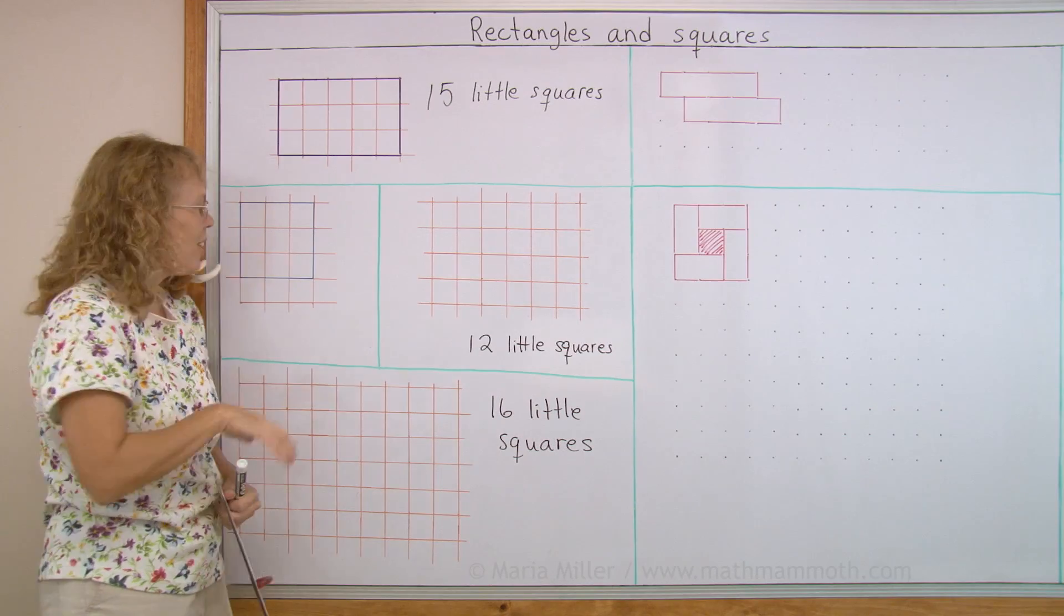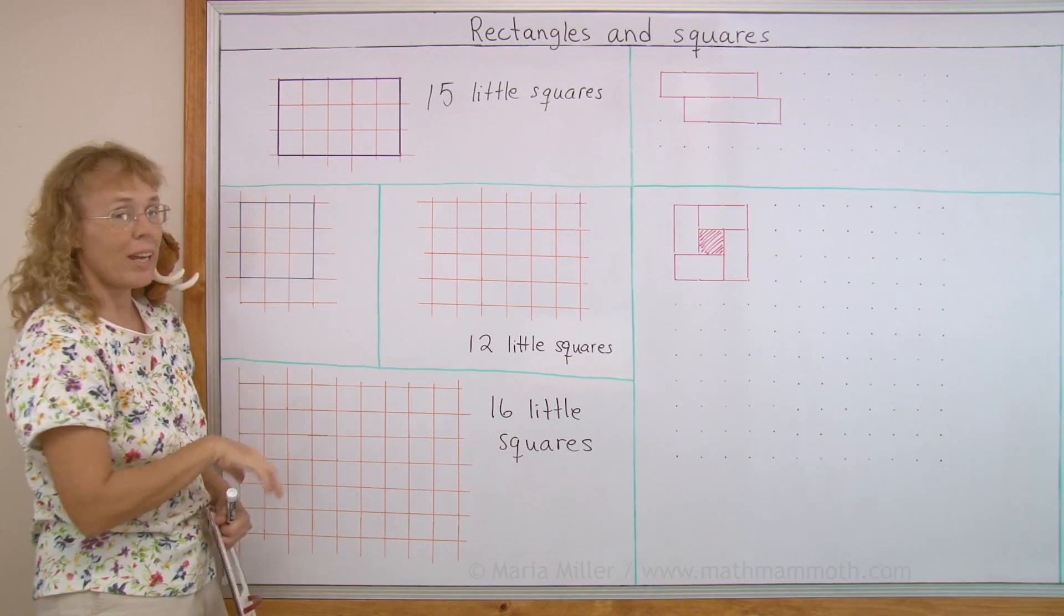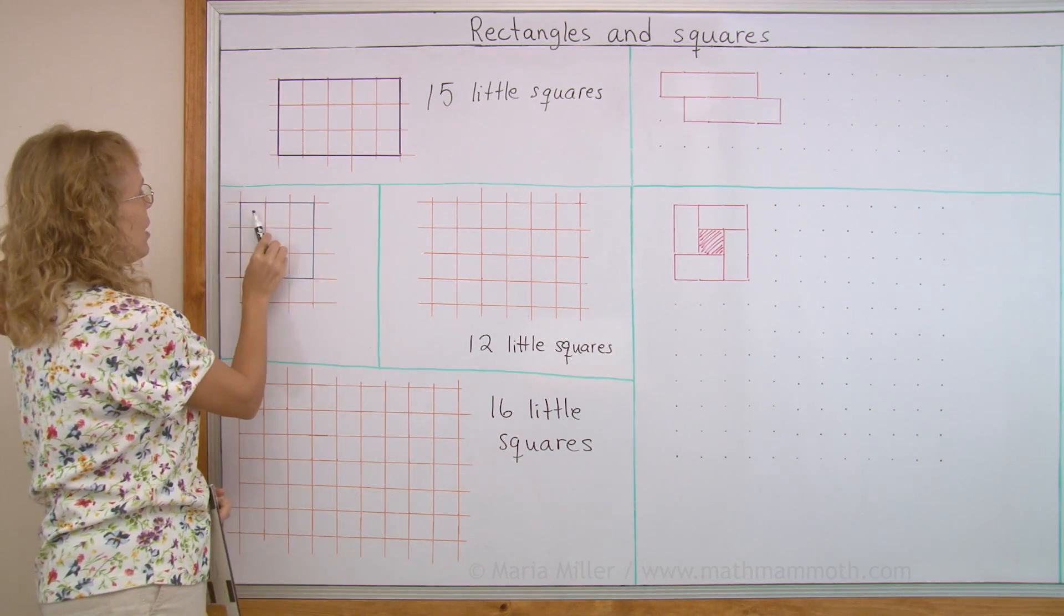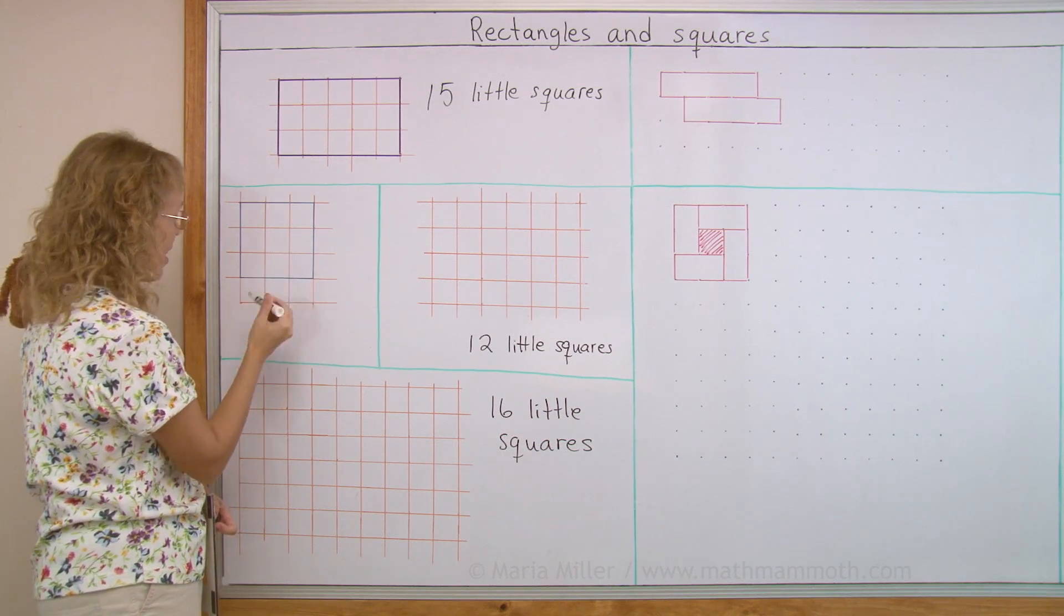Let's do the same here. I have here a blue square and it has 1, 2, 3, 4, 5, 6, 7, 8, 9.